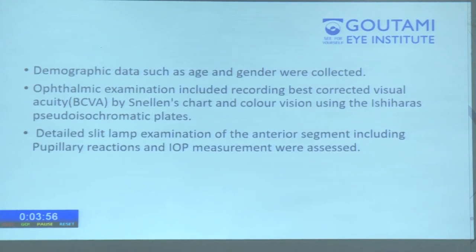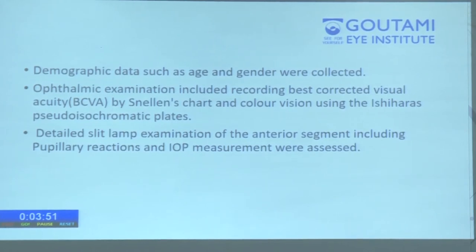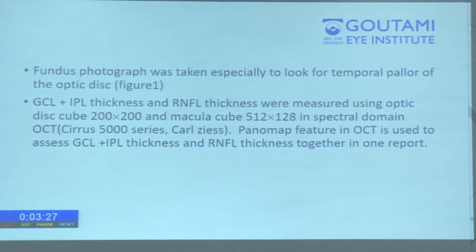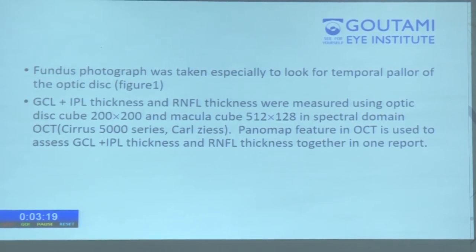Demographic data such as age and gender were collected. Ophthalmic examination included best corrected visual acuity by Snellen's chart and color vision using Ishihara pseudo-isochromatic plates. Detailed slit lamp examination of anterior segment including pupillary reactions and IOP were assessed. Fundus photographs were taken especially to look for temporal pallor of the optic disc, and GCL+IPL thickness and RNFL thickness were measured using optic disc cube 200×200 and macula cube 512×128 in spectral domain OCT. The Panomap feature in OCT was used to assess GCL+IPL thickness and RNFL thickness together in one report.